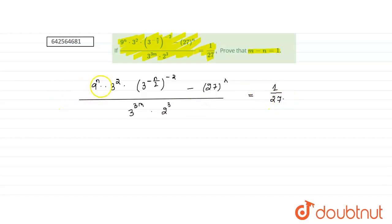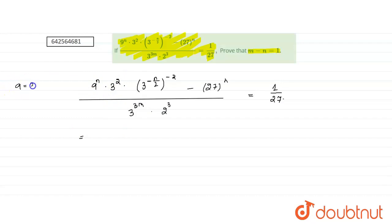Let us write all the terms — 9 and 27 — in the form of powers of 3. So 9 is equals to 3 squared and 27 is equals to 3 cubed. Let us write everything in terms of 3.